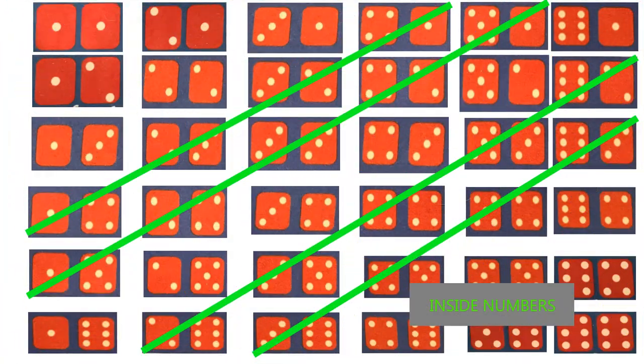A very popular bet is requesting the inside. The dealer will set you up on the four inside numbers of the box, including the five, six, eight, and nine, typically excluding the point unless indicated. You have four combinations of five, five combinations of six, five combinations of eight, and four combinations of nine, for a total of eighteen combinations.